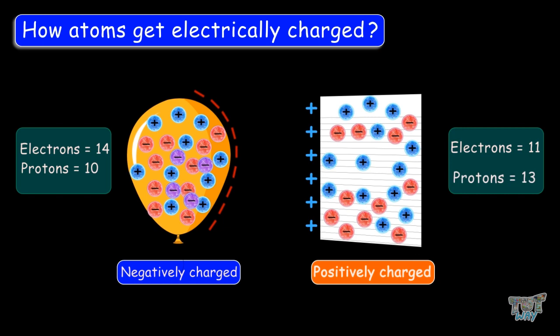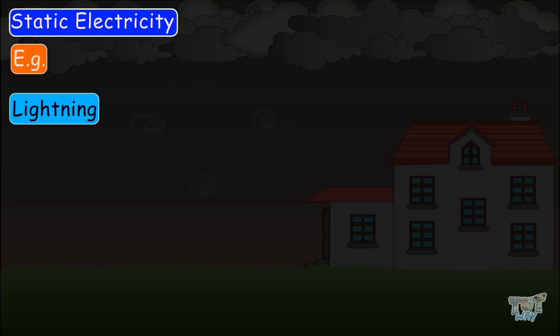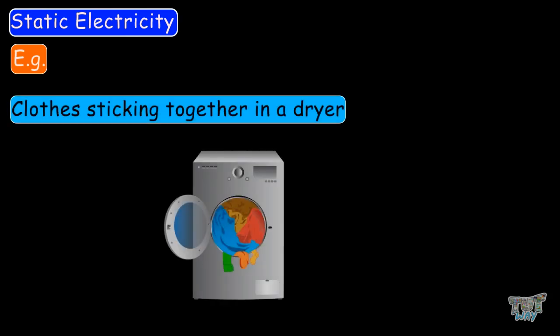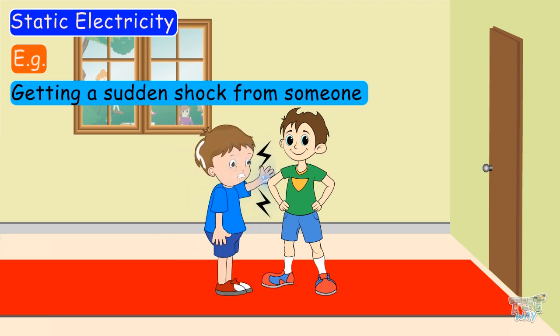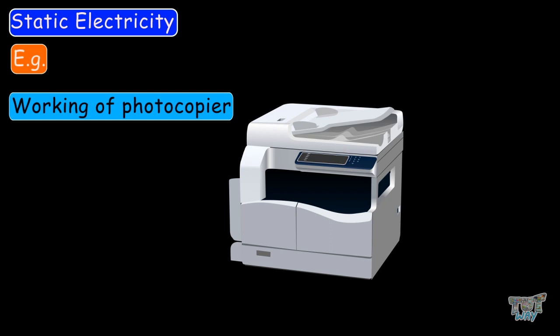This transfer of electrons results in static electricity. Now let's have a look at some examples of static electricity: lightning, clothes sticking together in a dryer, getting a sudden shock from someone, and the working of a photocopier — all are examples of static electricity.